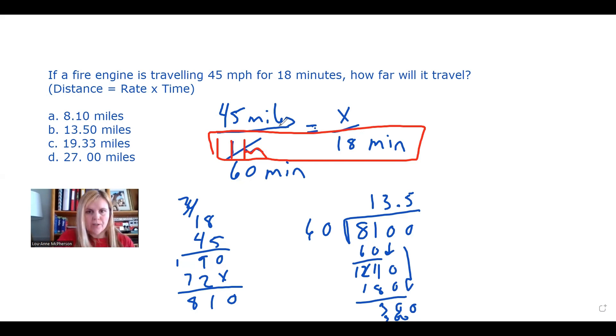So we're going to convert our hours into 60 minutes. So now we have 45 miles over 60 minutes equals x over 18 minutes. That is appropriate.